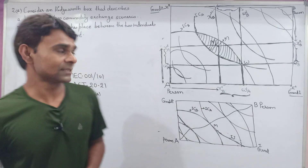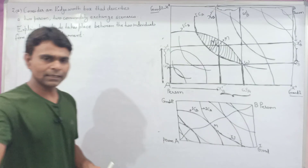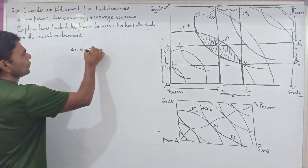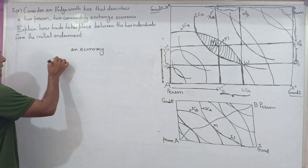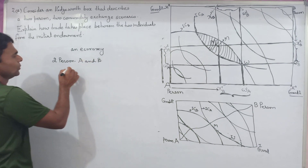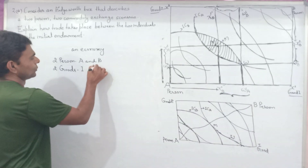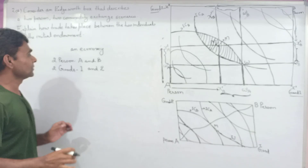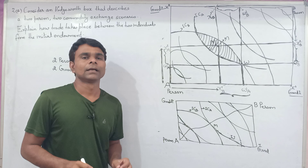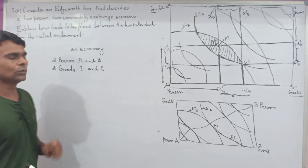Now let us start the discussion of the Edgeworth Box. Firstly, consider an economy. There are only two persons, A and B, and two goods, one and two.